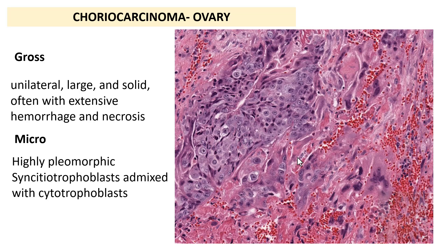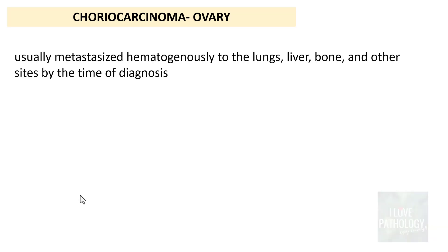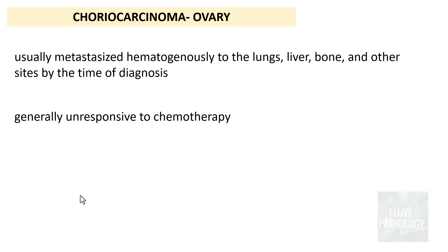Microscopically, choriocarcinomas show highly pleomorphic cells — just like embryonal carcinoma — but specifically these are syncytiotrophoblasts mixed with cytotrophoblasts. Hemorrhage and necrosis are extremely common. As mentioned, they usually have metastasized to the lungs, liver, bone, and other organs at the time of diagnosis. These tumors are generally not responsive to chemotherapy, and that is why choriocarcinomas of the ovary are extremely fatal.